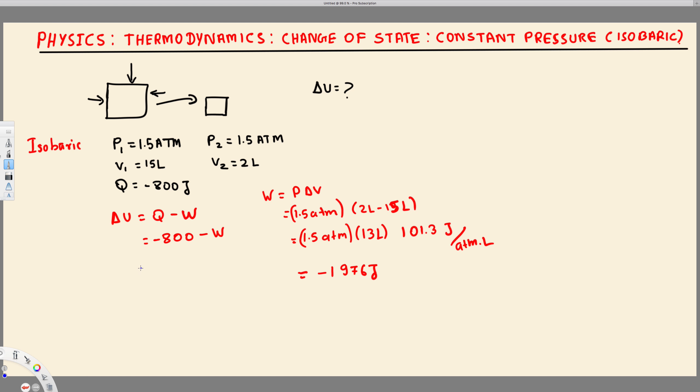So let's plug this one. This is going to be minus 800 minus minus 1976, and that's going to give us, this is going to become plus, minus minus plus. So this one minus 800 plus 1976, and that's equal to 1176 joule. That's going to be the change in internal energy.